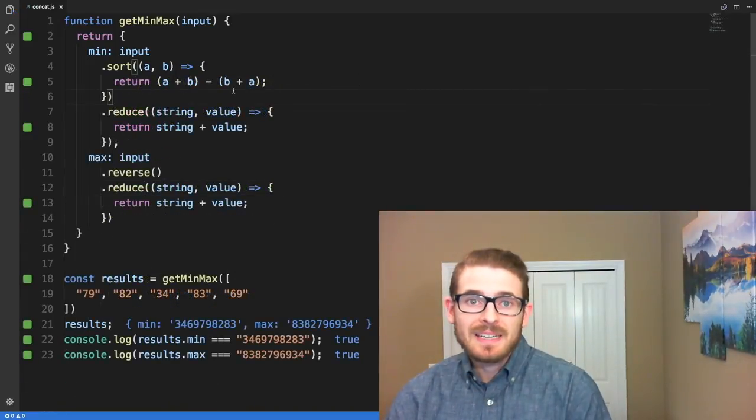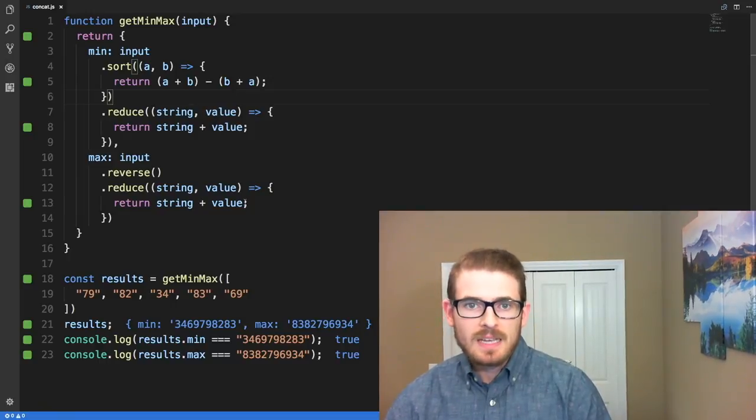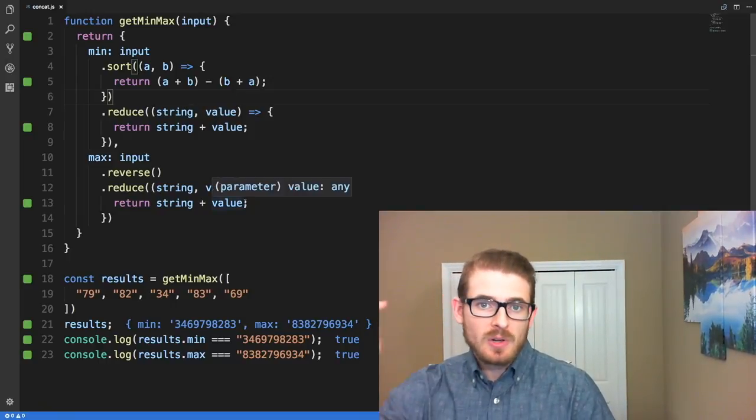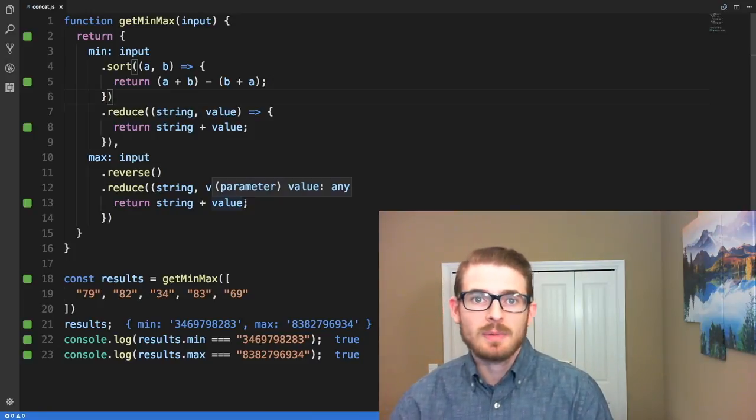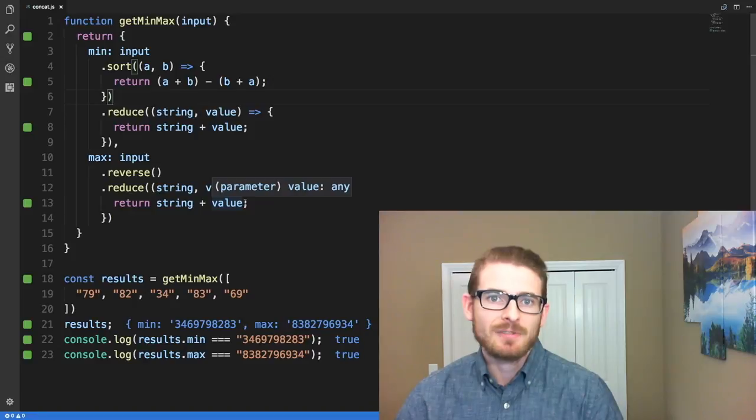Alright, so that wraps up the concatenated integers problem. Again, if you have a different solution, feel free to post it in the comments. And then also like this tutorial if you thought it was good, and be sure to subscribe to FreeCodeCamp below. Thanks for watching.